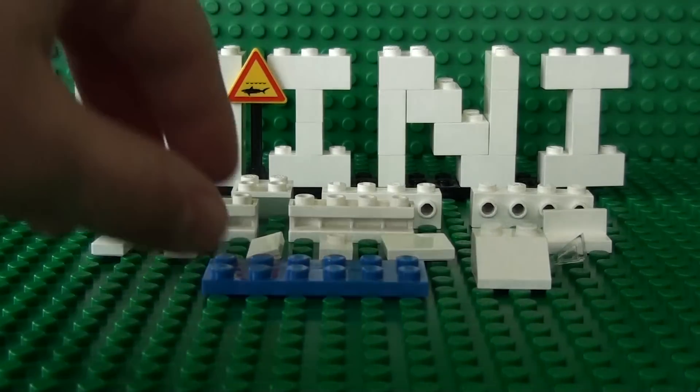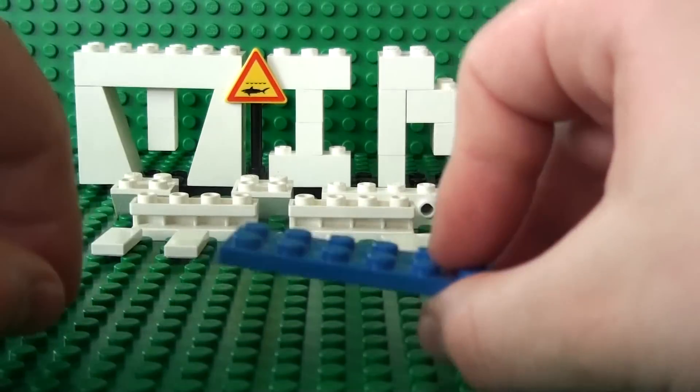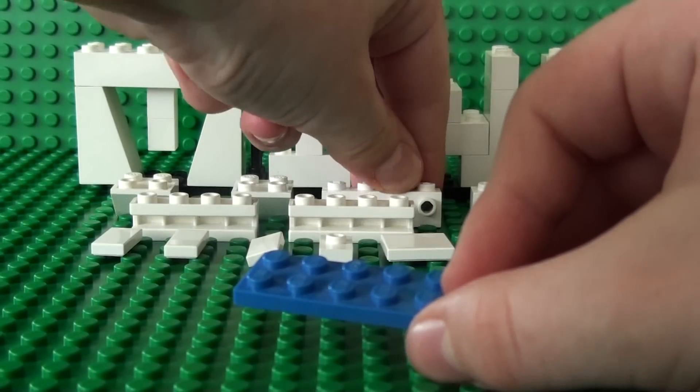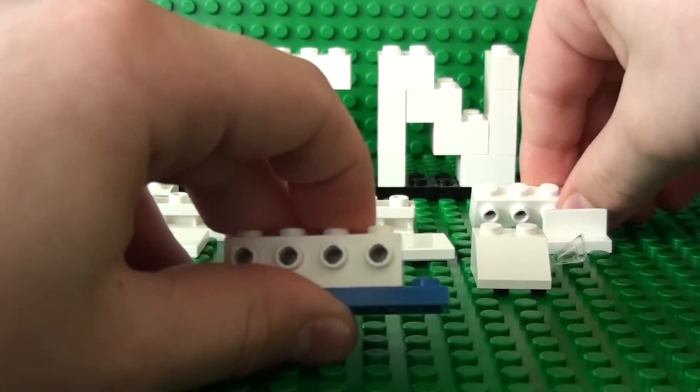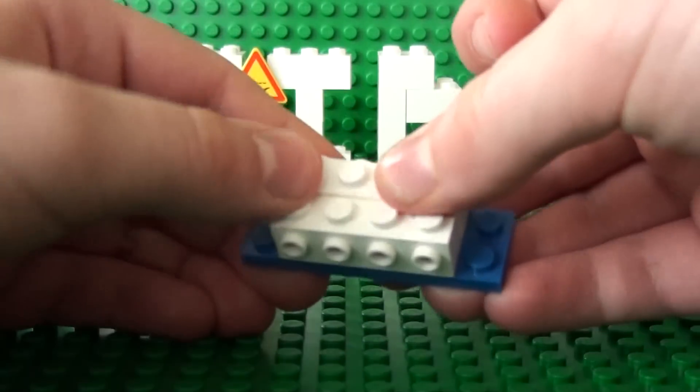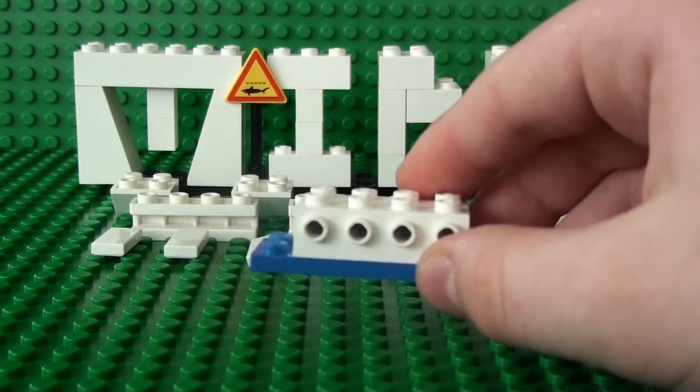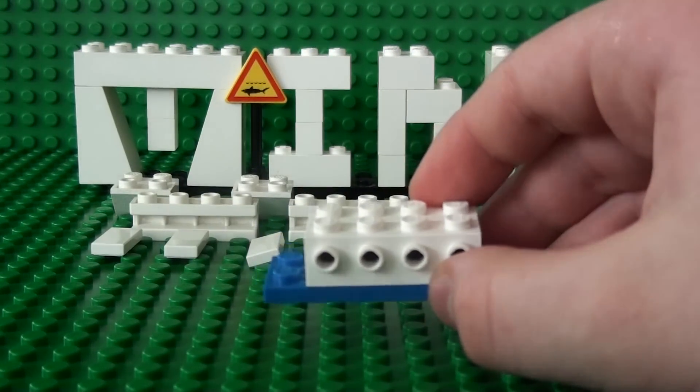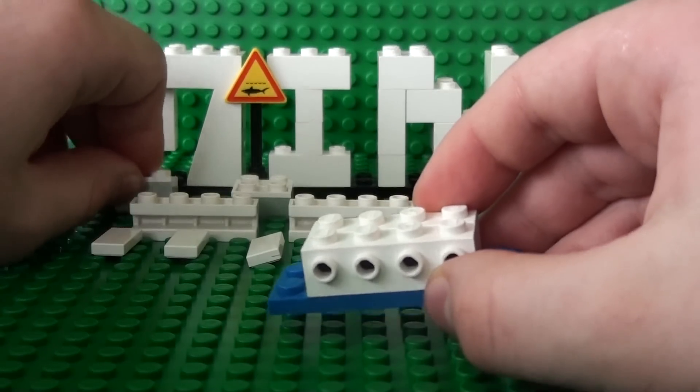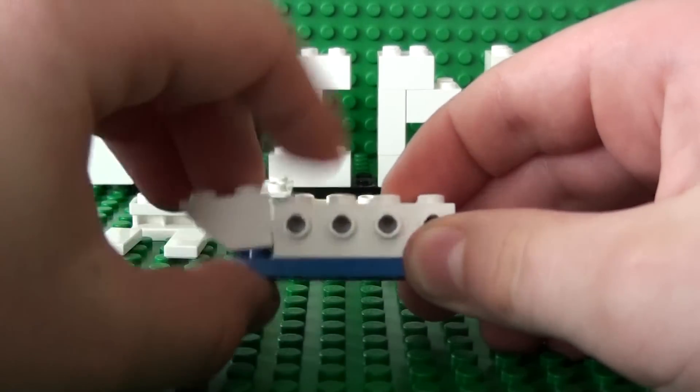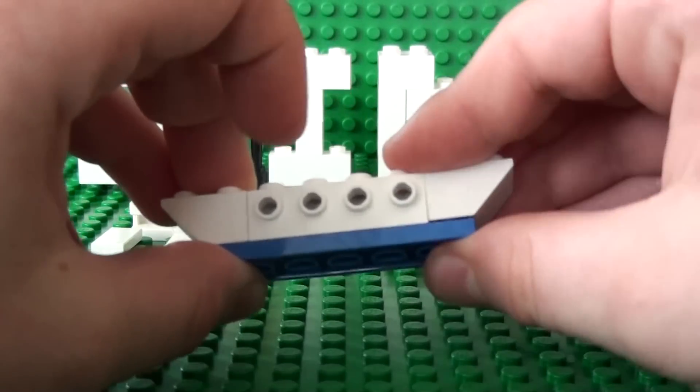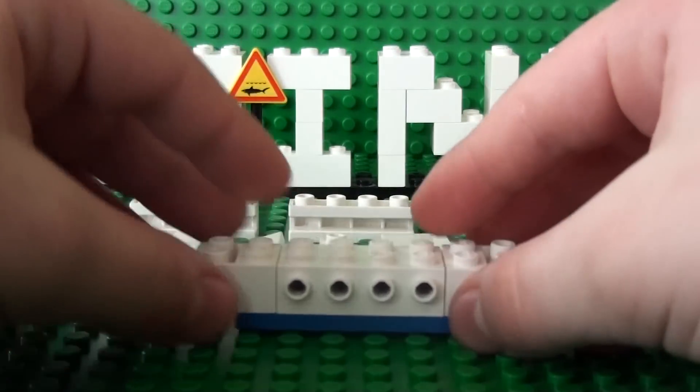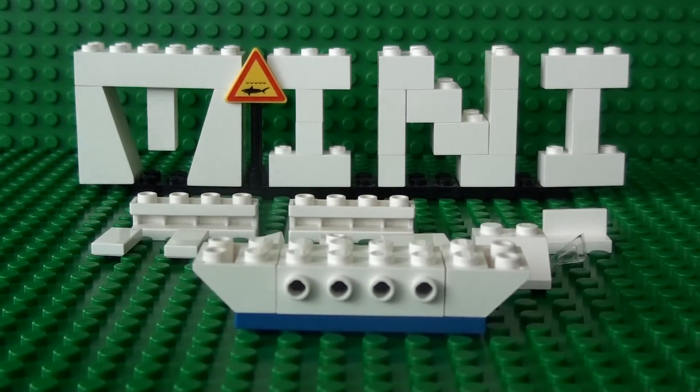First you take the 2x6 plate and both of the 1x4s with holes and clip them in the middle. Now you take both of the upside down slopes and place them on either side.